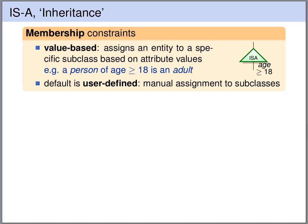The entity relationship model gives us different ways to specify how the higher level entities are distributed over the lower level entity sets. For instance, we can use a value-based assignment. We can annotate the connection from the ISA node to a lower level entity set with a predicate — in this case, H is greater or equal to 18. Then the higher level entity will be assigned to the lower level entity set automatically based on this predicate. For example, with a higher level entity set person and two lower level entity sets adult and minor, any person whose age is at least 18 would automatically be assigned to the lower level entity set adult.